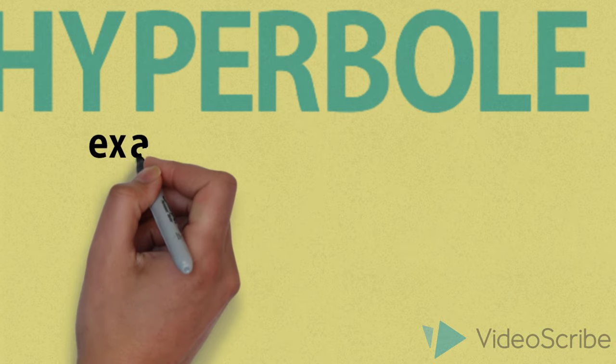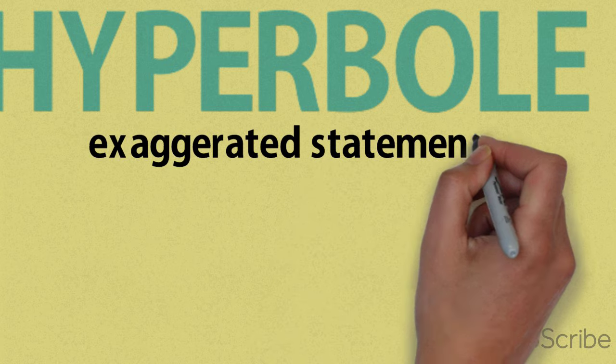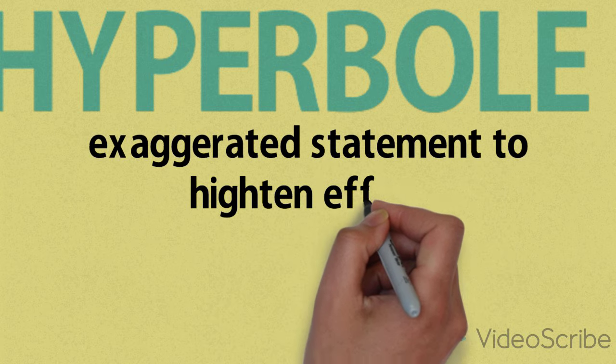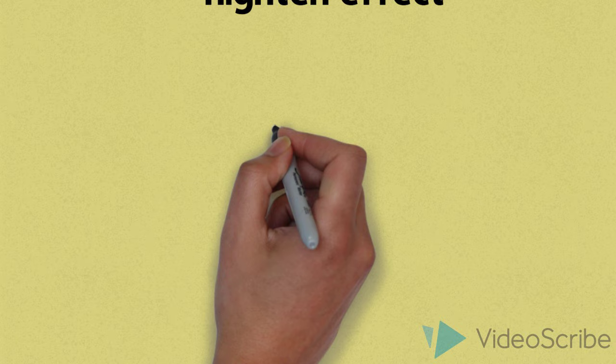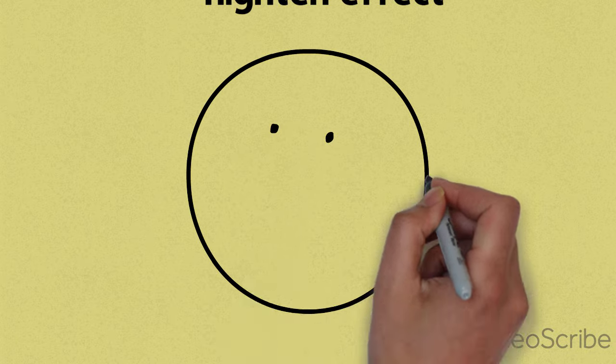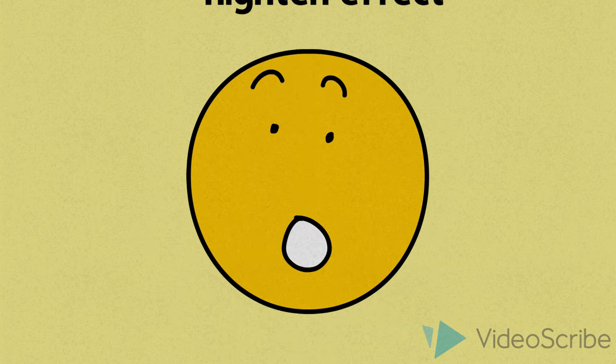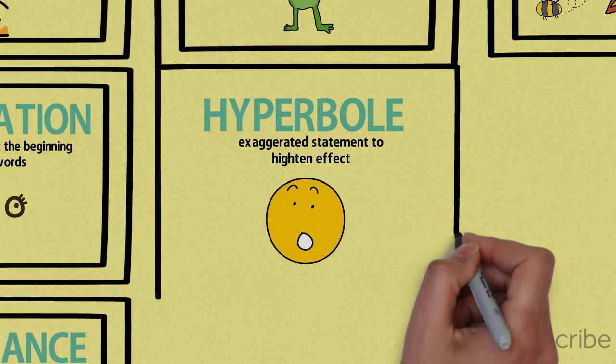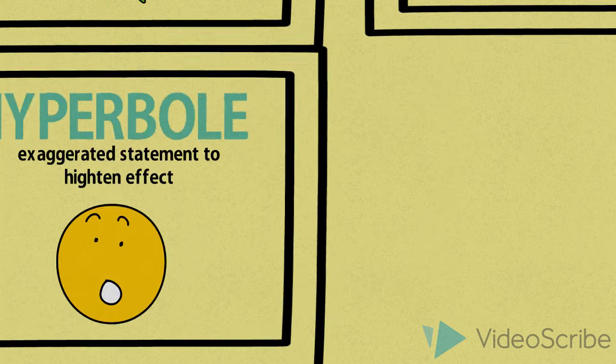Hyperbole. Hyperbole is an exaggeration of a statement used to heighten effect. It is not used to mislead the reader but to emphasize a point. She said so on several million occasions. Several million occasions is a hyperbole. So if you're exaggerating something, you're being hyperbolic.